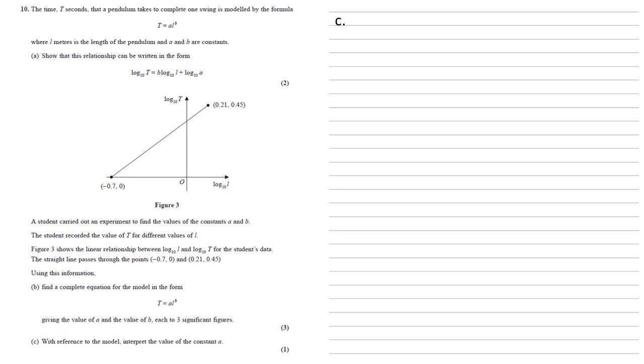If that was the case, we would have t is equal to a times 1, which is just equal to a. Therefore we can see that a would be the time taken for one swing of a pendulum of length one metre.